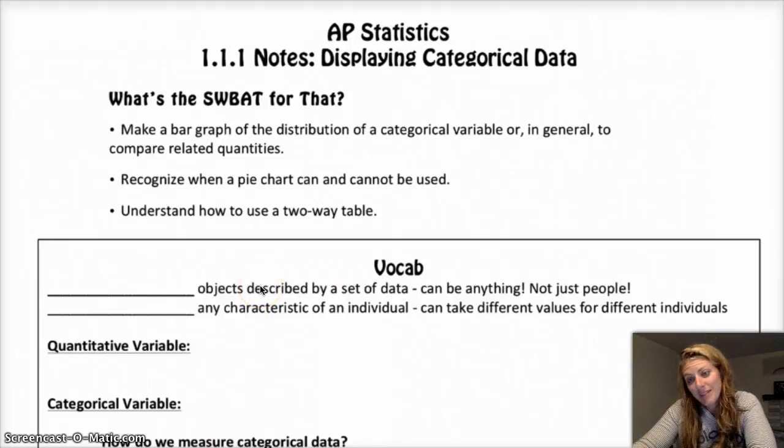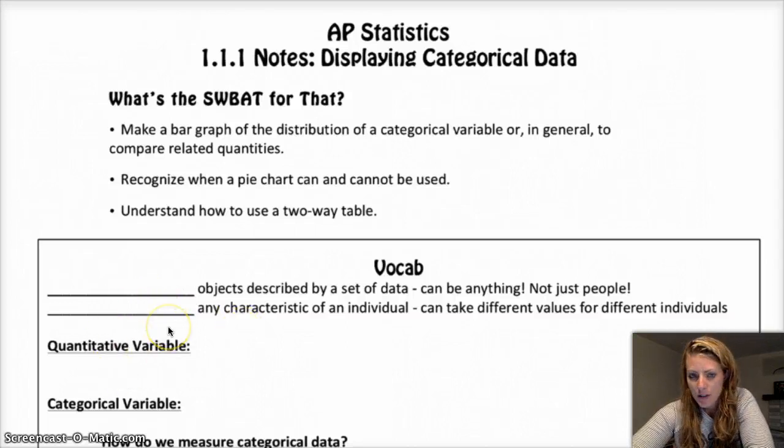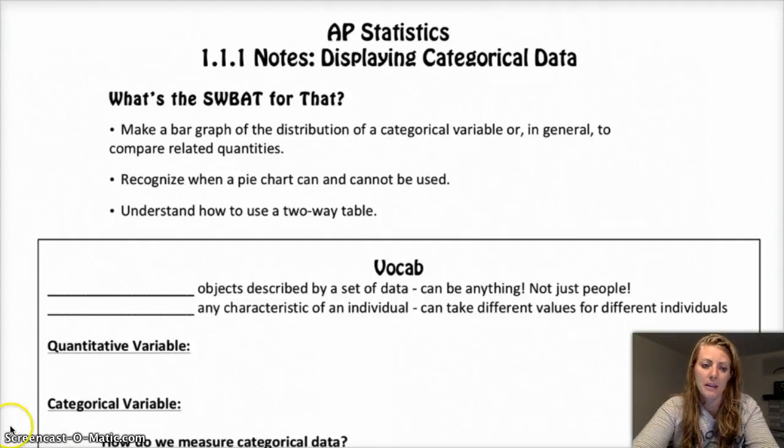First is the individuals, or the objects described by a set of data. It can be anything, not just people. And then the variables of interest are any characteristic that we're interested in studying. So if I'm studying grade point averages of people at Dawson, the individuals are the students at Dawson, and the variable would be the GPA.